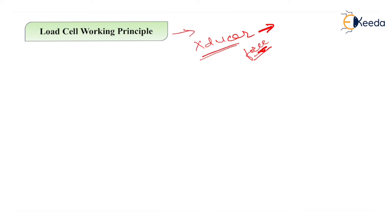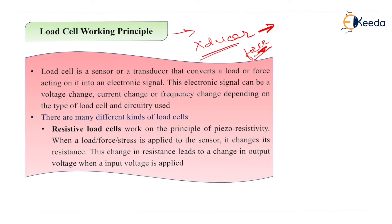Now let us see the working principle of the load cell. A load cell is a sensor or transducer that converts a load or force acting on it into an electrical signal. These electronic signals can be a voltage change, a current change, or a frequency change depending upon the type of load cell and the circuitry used.